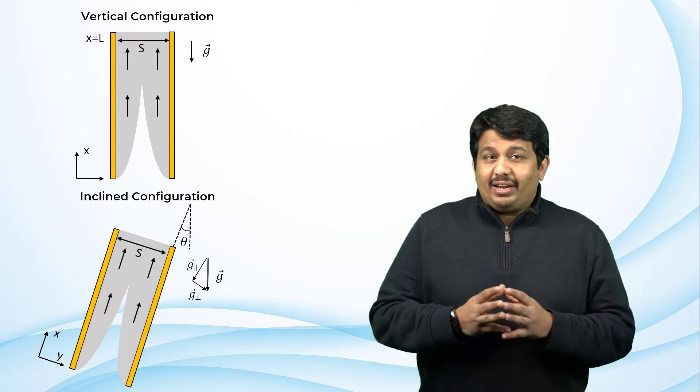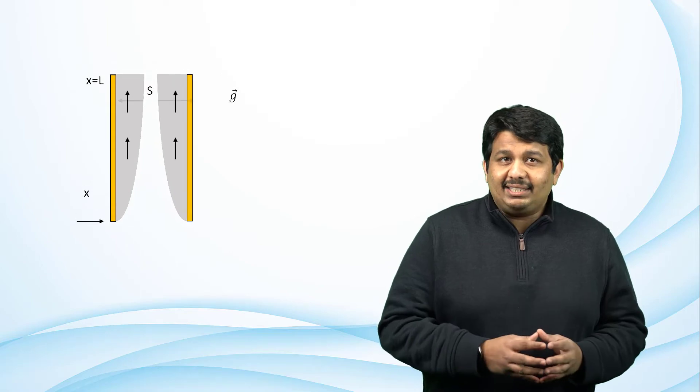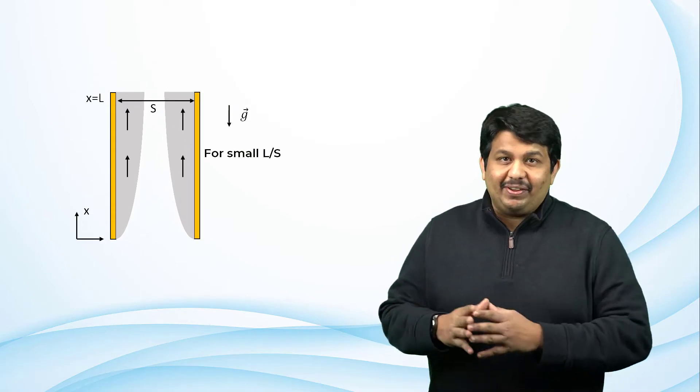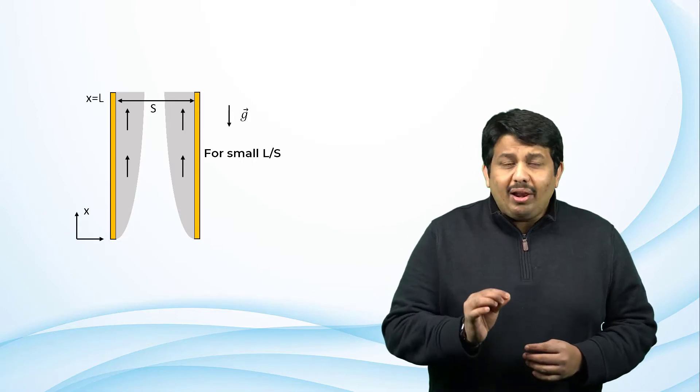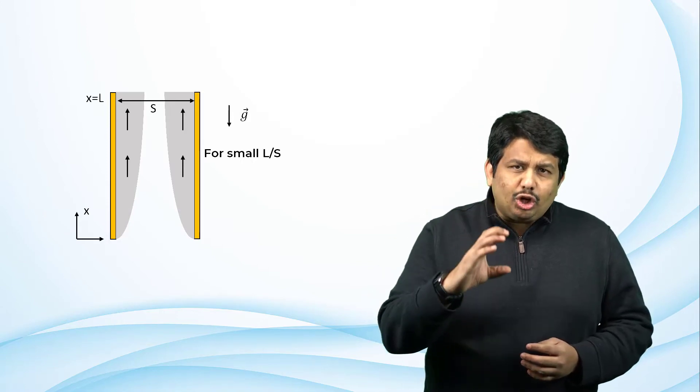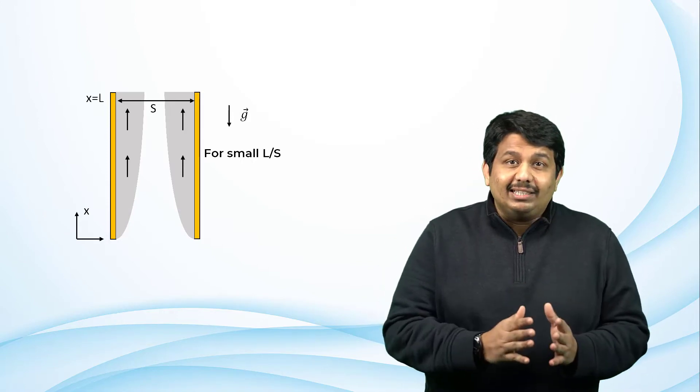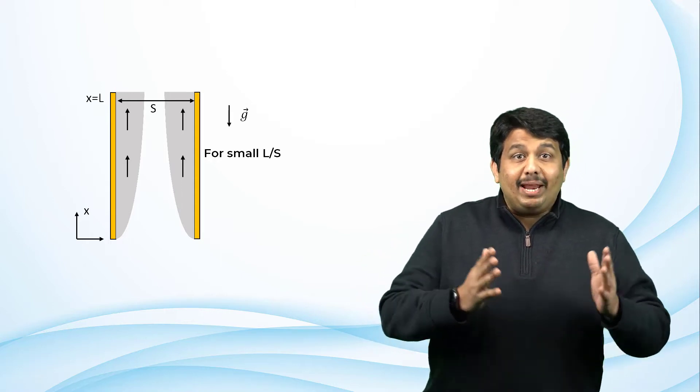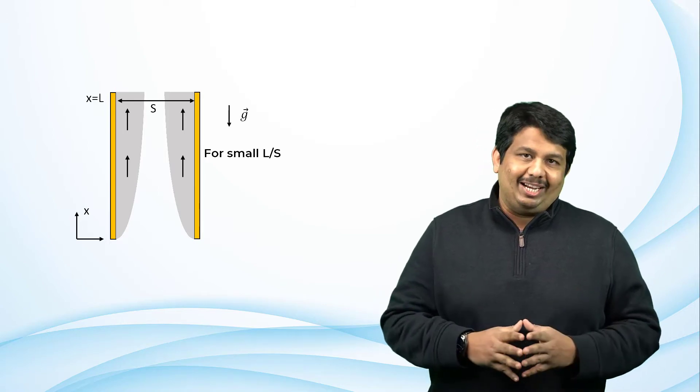If we consider the ratio of L over S, where L is the length of the plates and S is the separation between the plates. For small ratios, i.e., for shorter channels or for channels with really large plate separation, the boundary layers develop independently over each plate.